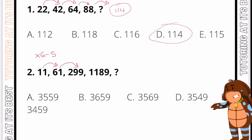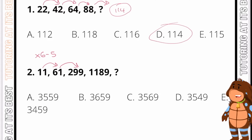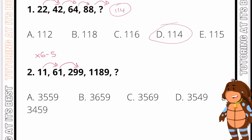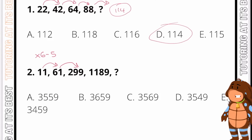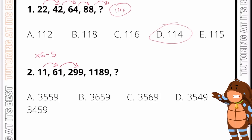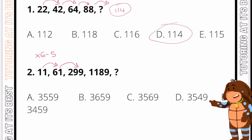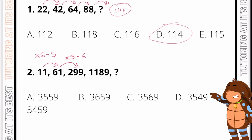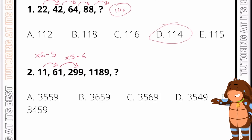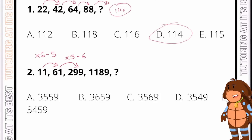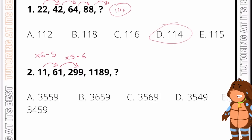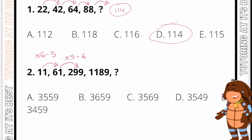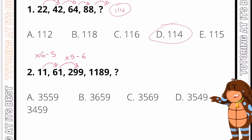Let's see if that works going from 61 to 299. If I multiply 61 by six I get 366, and then subtracting five does not give 299. So what if we multiply by five and then subtract six? That would be 305, and if we take six away, that gives us 299. So it almost seems as if we are decreasing the multiplication by one and increasing the subtraction by one each step.